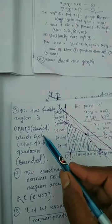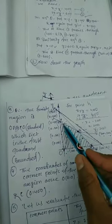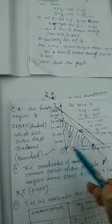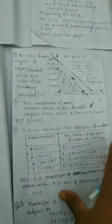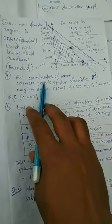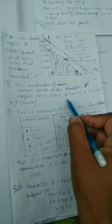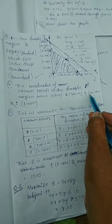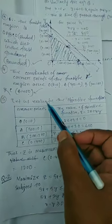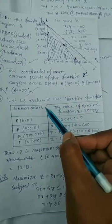The feasible region here is bounded. In some problems we may face an unbounded region — at that time I will explain how to solve it. The corner points of the feasible region are O (0,0), A (300,0), B (200,200), and C (0,400). Step 5: we have to calculate the value of the objective function Z at each of these corner points.